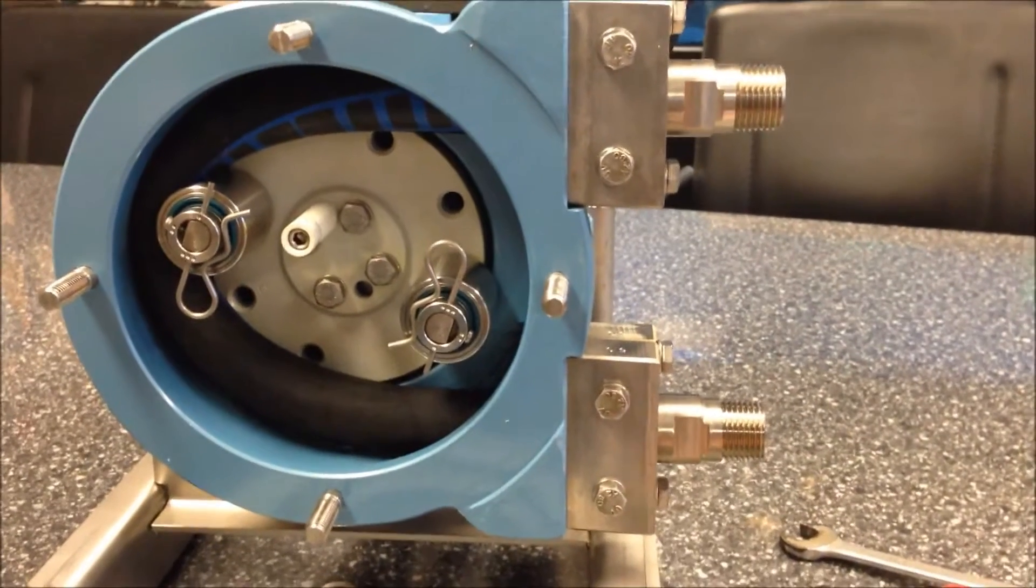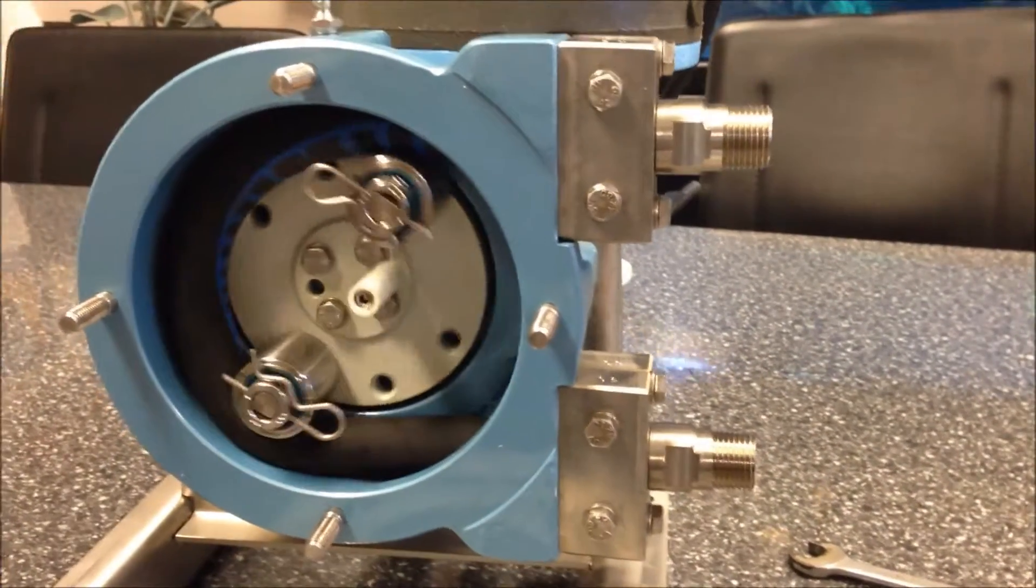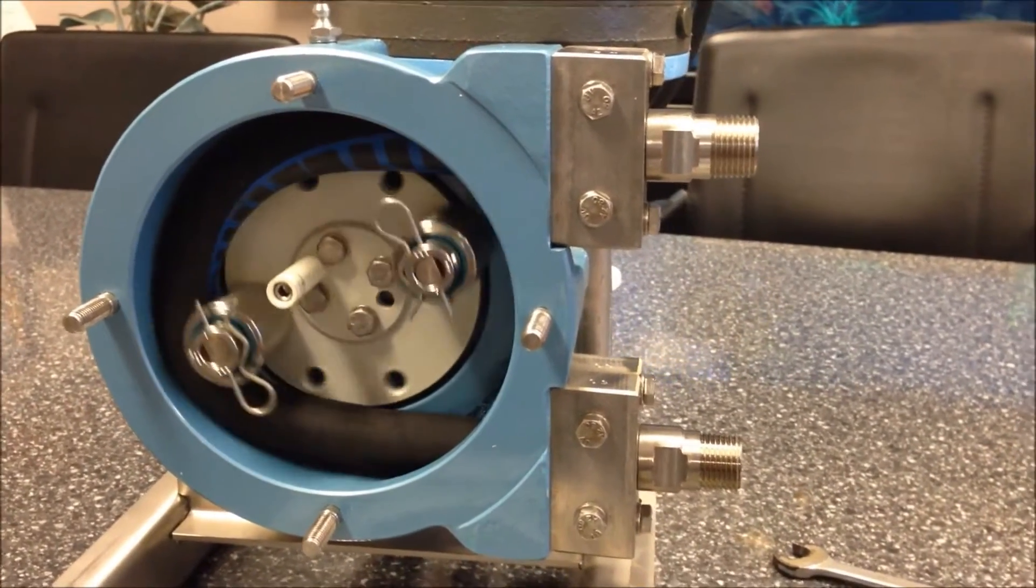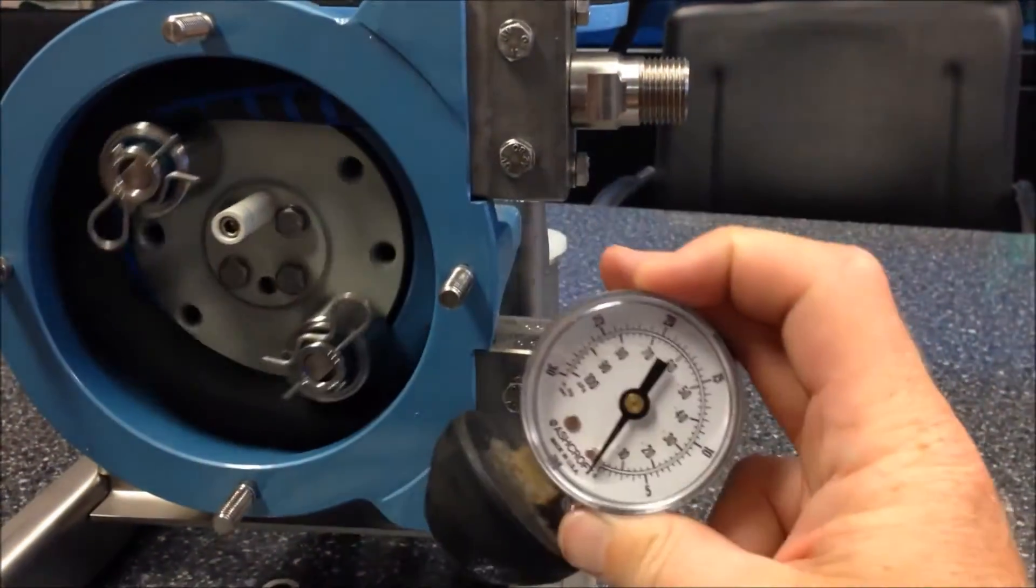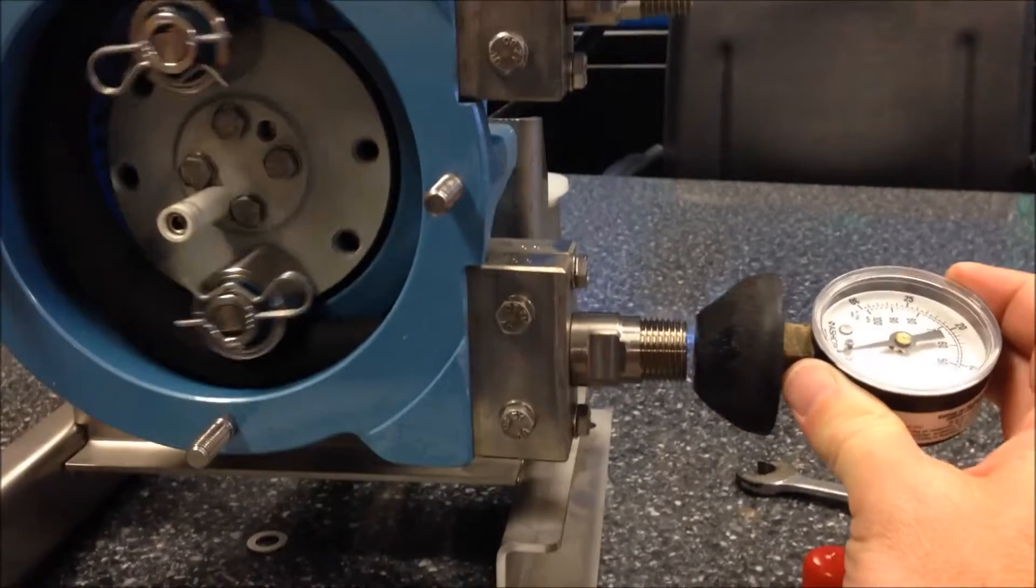Go ahead and start the pump. This pump is operating in a clockwise orientation which puts the vacuum port at the bottom. We're going to take our vacuum gauge and connect it to the vacuum port.